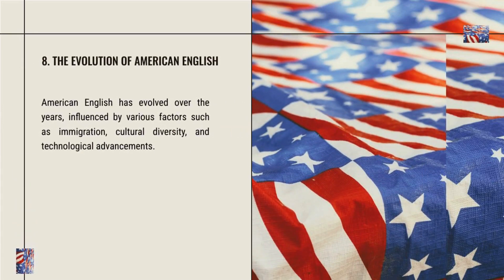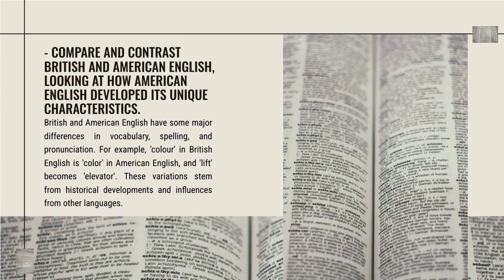American English has evolved over the years, influenced by various factors such as immigration, cultural diversity, and technological advancements. British and American English have major differences in vocabulary, spelling, and pronunciation. For example, 'colour' in British English becomes 'color' in American English, and 'lift' becomes 'elevator.' These variations stem from historical developments and influences from other languages.